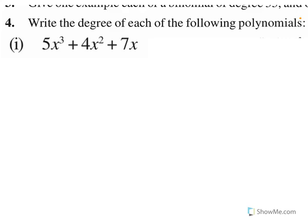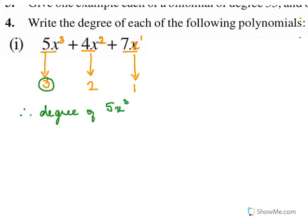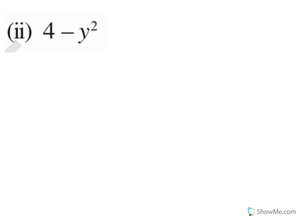Find the degree of each of the following polynomials. The degree is the highest power. In 5x³ + 4x² + 7x, we have three terms: the power of the first term is 3, the power of the second term is 2, and the power of the third term is 1. The highest power is 3, therefore the degree of 5x³ + 4x² + 7x is 3.